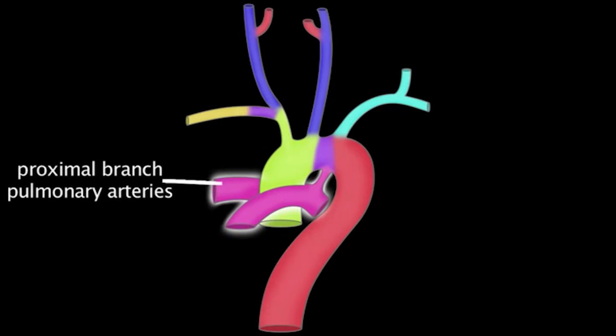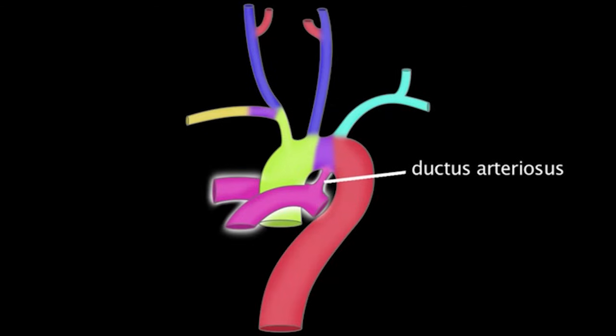The sixth aortic arch produces the proximal segment of the branch pulmonary arteries, the ductus arteriosus, and provides pulmonary blood flow via the branch that develops lung buds.